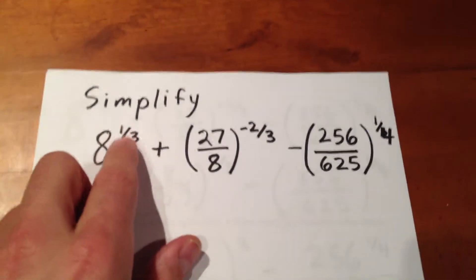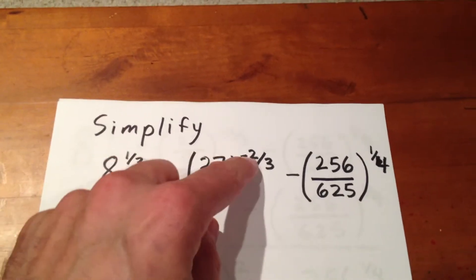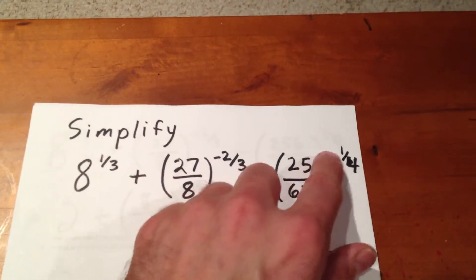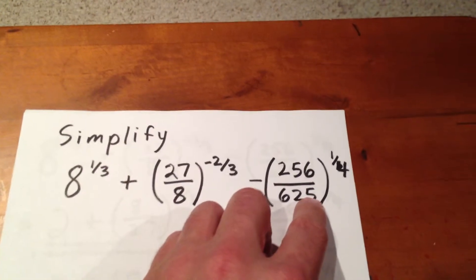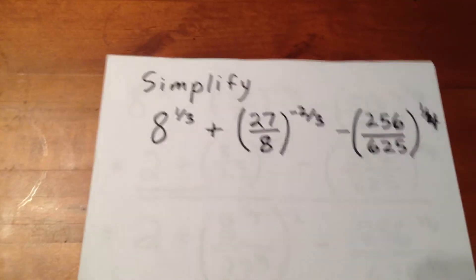We're going to have to find the third root of 8. We're going to have to invert this, make it 8 over 27 to the positive 2 thirds and evaluate that. And we're going to have to figure out the fourth root of 256 and the fourth root of 625. Figure out each expression separately and then use our laws of fractions to evaluate.